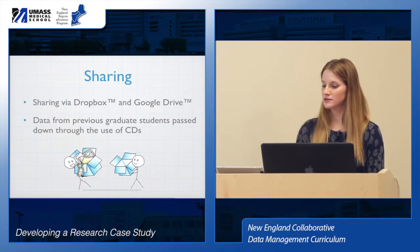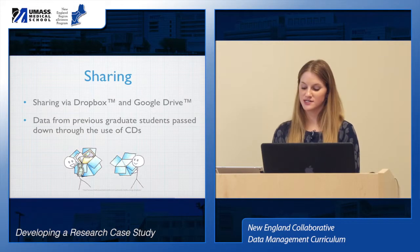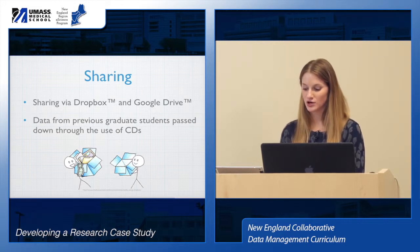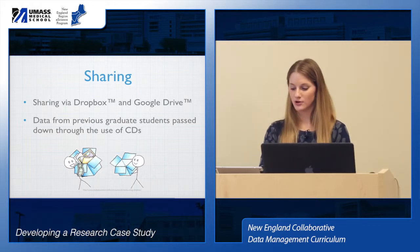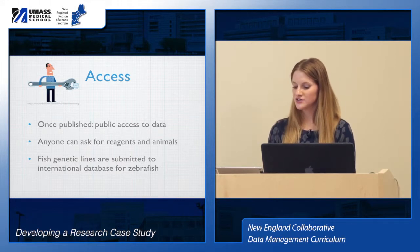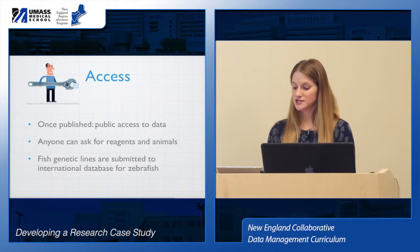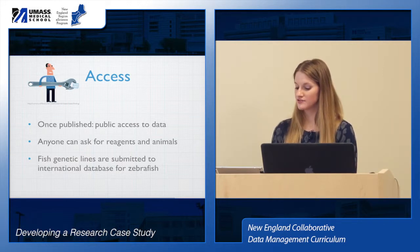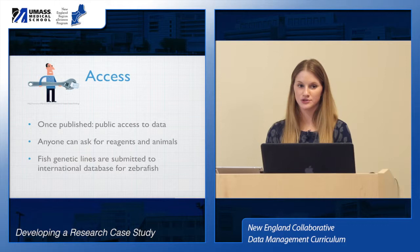When my graduate student began working in the research lab, she was given CDs with previous data containing images and data analysis. Currently, the lab shares their data with each other using Google Drive and Dropbox on the university server, and ultimately the PI is responsible for all the data. In terms of access, my researcher felt that she can get all the data she needs pre-publication. Once the research is published, anyone who wants it can access the relevant data in an article, and therefore anyone can ask for reagents or animals used in a published study.